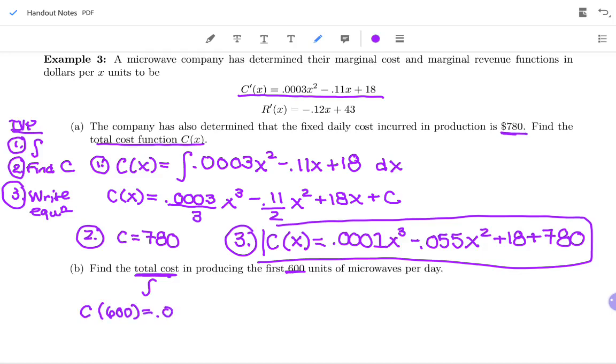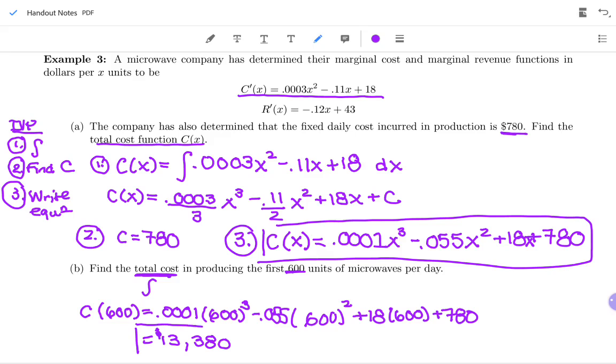Up above here, we're going to do C of 600. So we've grabbed our calculator. We're doing 0.0001 times 600 cubed minus 0.055 times 600 squared plus 18 - ooh, I missed an x up here - times 600 plus 780. Didn't quite copy down my whole antiderivative correctly, so part B saved me. So when you plug in 600 for all those x's, you get $13,380. There's their total cost for making 600 microwaves in a day.